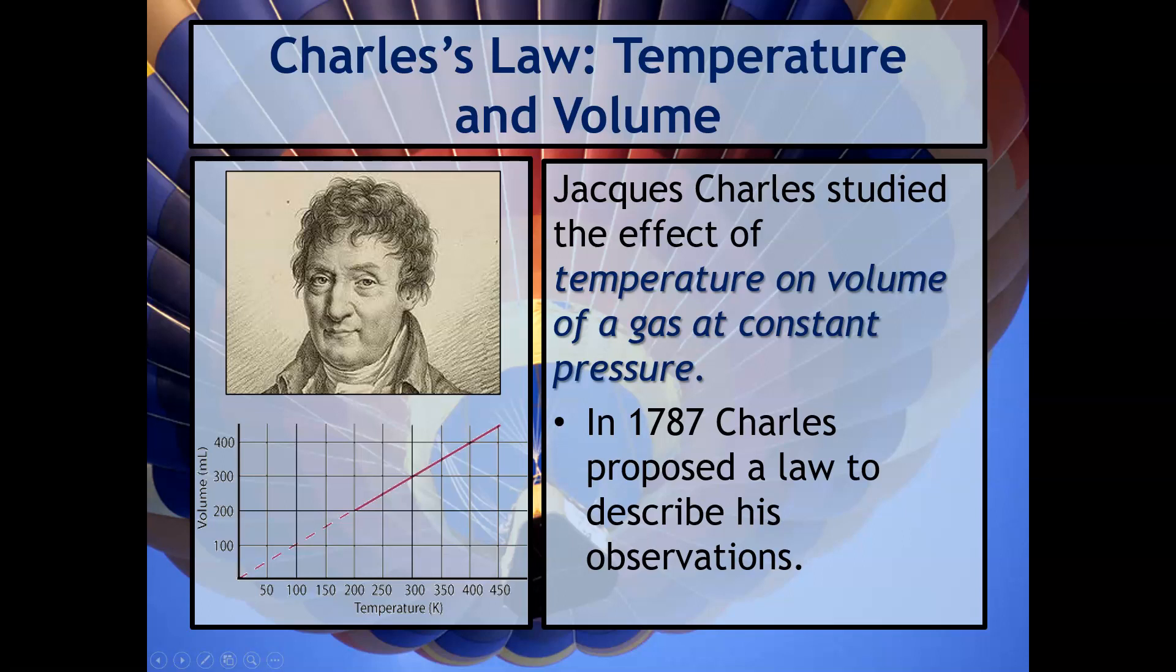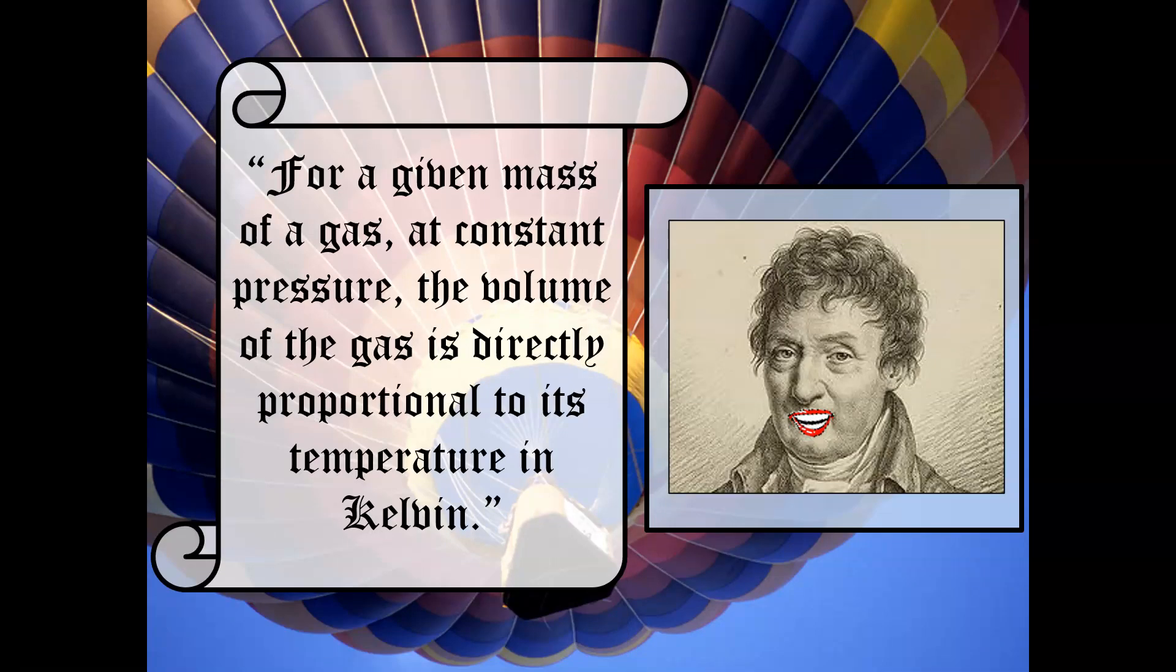You may be interested in what this dotted line is representing. This is actually extrapolating data. This data is going back towards the origin, which is at a temperature of zero Kelvin, which you guys know as absolute zero. Charles is very interesting because not only did he define this relationship, but he's also one of the people that's credited with being able to define what absolute zero is. He says for a given mass of a gas at constant pressure, the volume of a gas is directly proportional to its temperature in Kelvin.